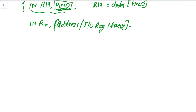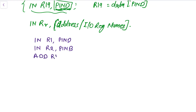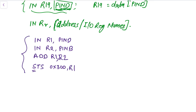Let's understand this with an example. If we write: IN r1 PIND, IN r2 PINB, then ADD r1 r2, and finally STS 0x30 r1 — can you solve this? Let me explain one by one.